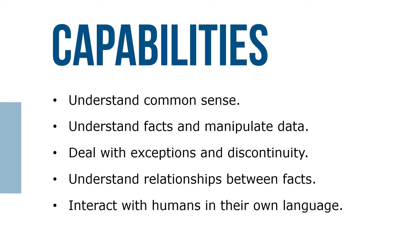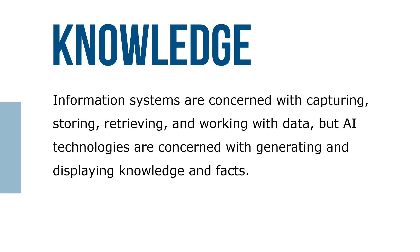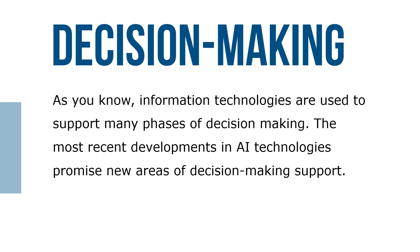Information systems are concerned with capturing, storing, retrieving, and working with data, but AI technologies are concerned with generating and displaying knowledge and facts. As information technologies are used to support many phases of decision making, the most recent developments in AI technologies promise new areas of decision-making support.